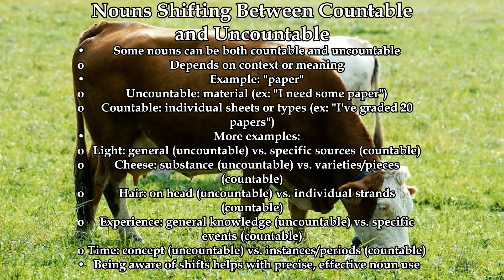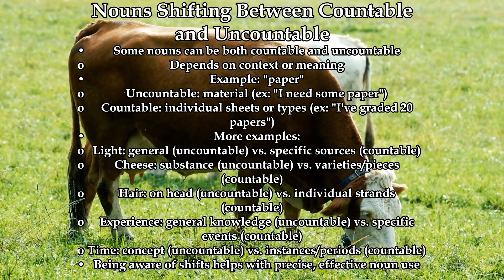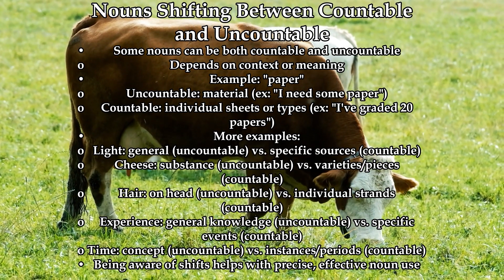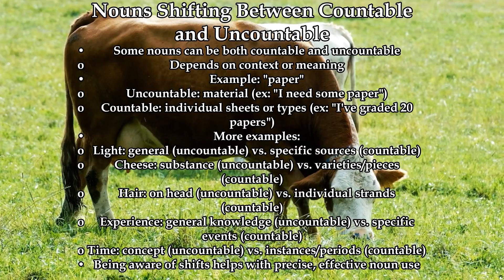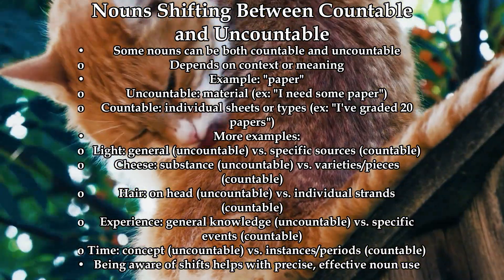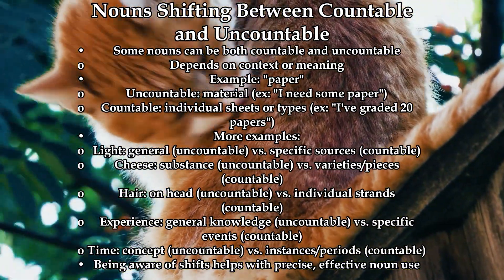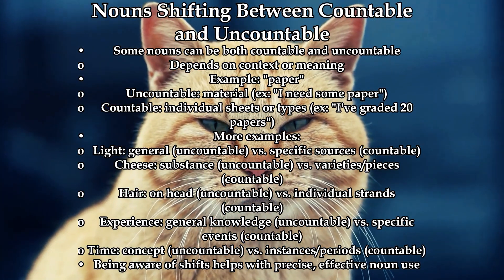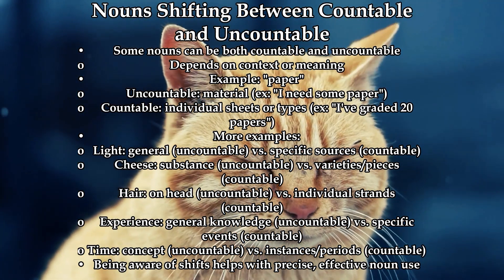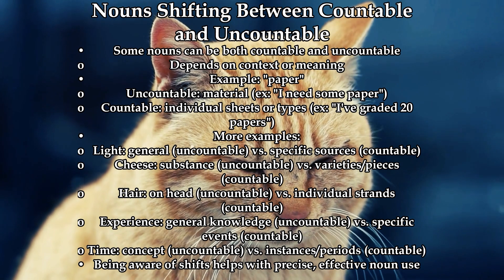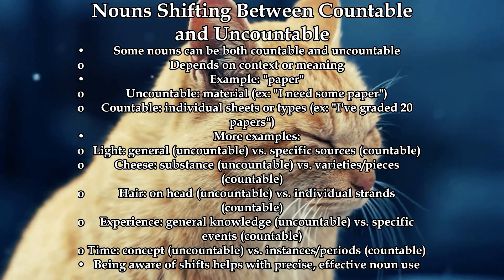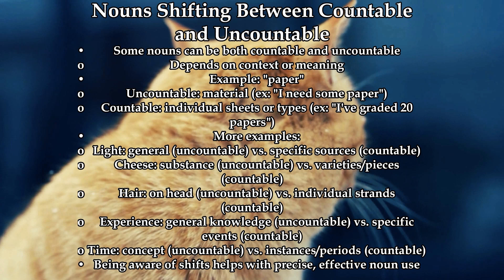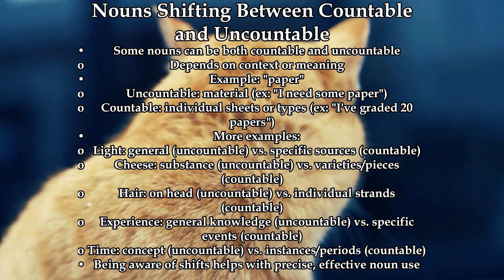Countable and uncountable noun shifts. Some nouns in English can be both countable and uncountable, depending on the context or meaning. For example, 'paper' is usually uncountable when referring to the material, as in 'I need some paper for the printer.' However, it becomes countable when talking about individual sheets or types of paper, like 'I've graded 20 papers today,' or 'they offer a variety of papers for different uses.'